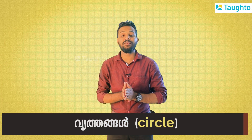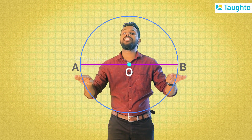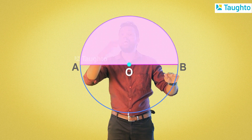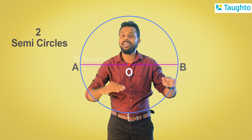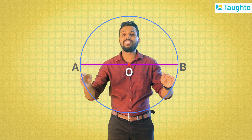Here is an important concept of the circle. I have a circle, a center. I have a diameter AB. I have semicircles, and I have a point in the middle.